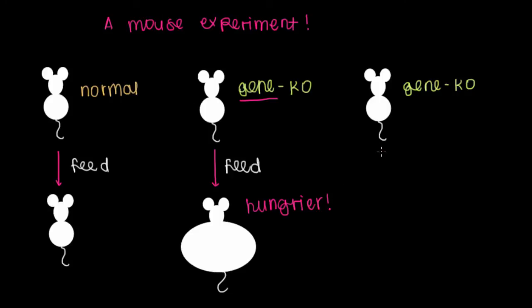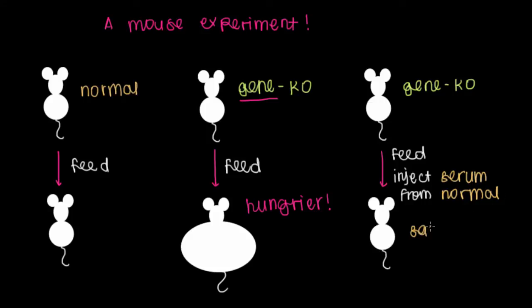But then the unusual thing was that when they took this same strain of mouse that had this exact same gene knocked out or missing, and then fed them, but also injected the serum from the normal mouse or injected blood from the normal mouse, they found that over time, the mouse looked pretty much the same as the normal mouse.